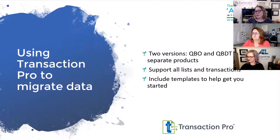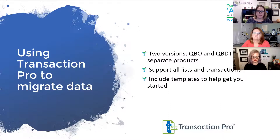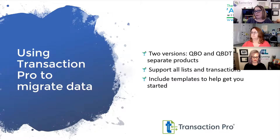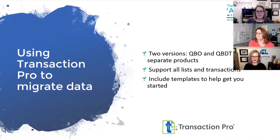Using Transaction Pro to migrate data — first of all, there are two versions. QuickBooks Online: there's a QuickBooks Online version which you subscribe to per company. And there's the QuickBooks Desktop product, which is completely separate and works with any of your desktop companies — you purchase it once and then you have it for all the companies. It supports all lists and transactions and includes templates to help you get started.